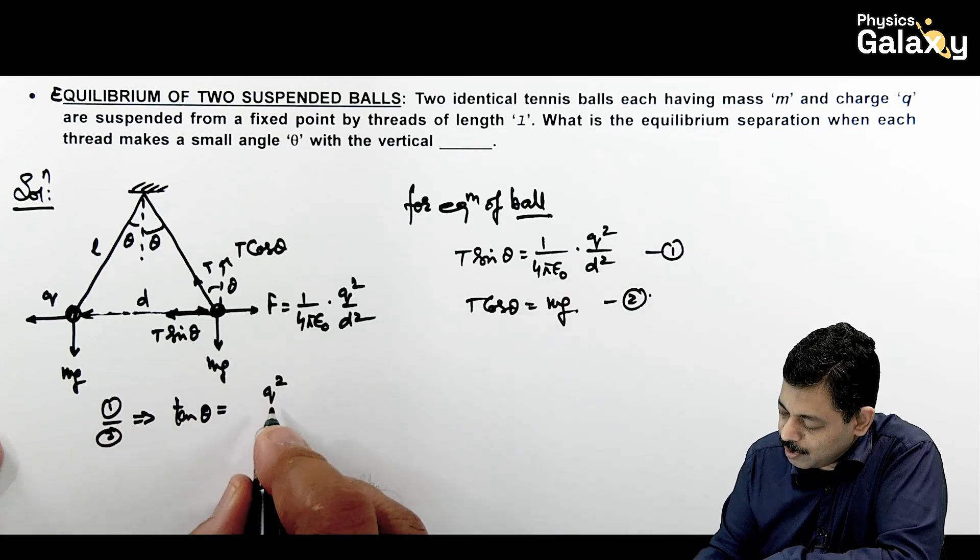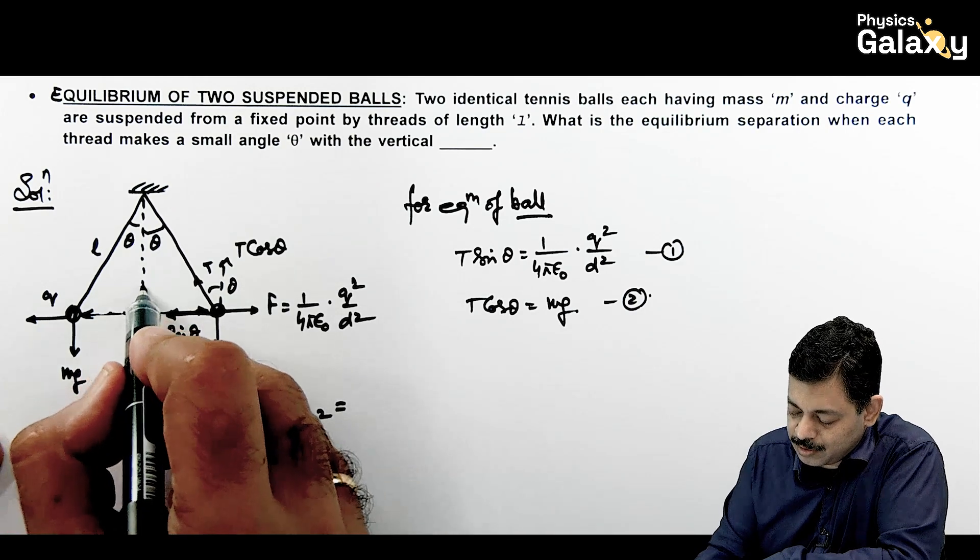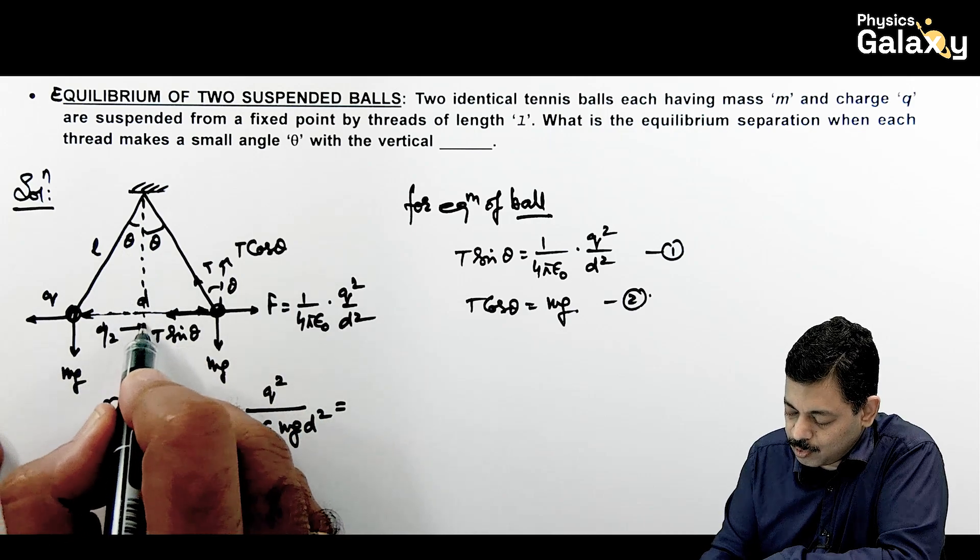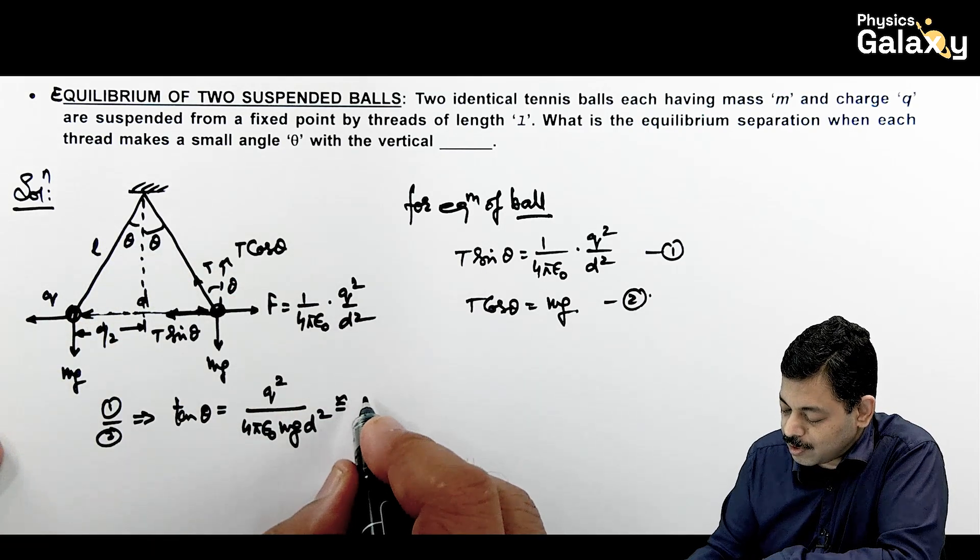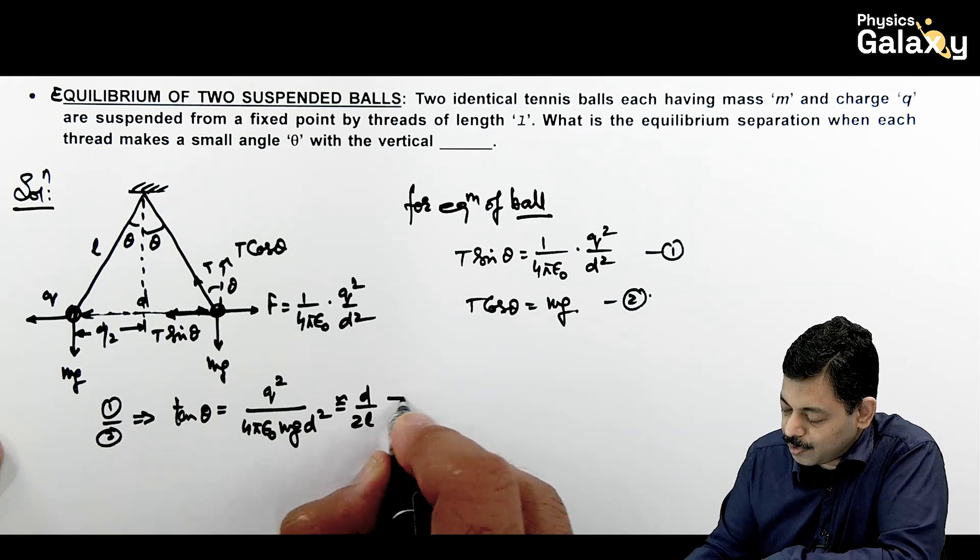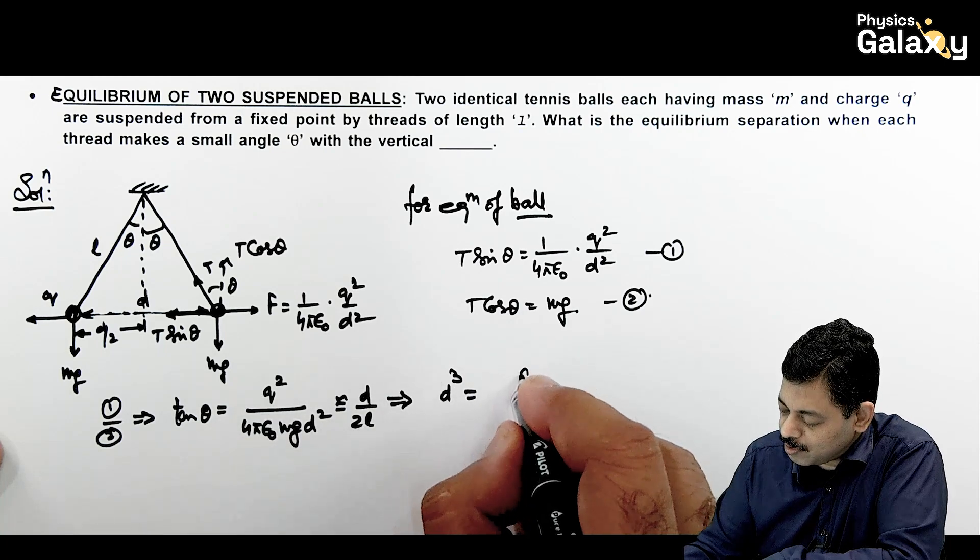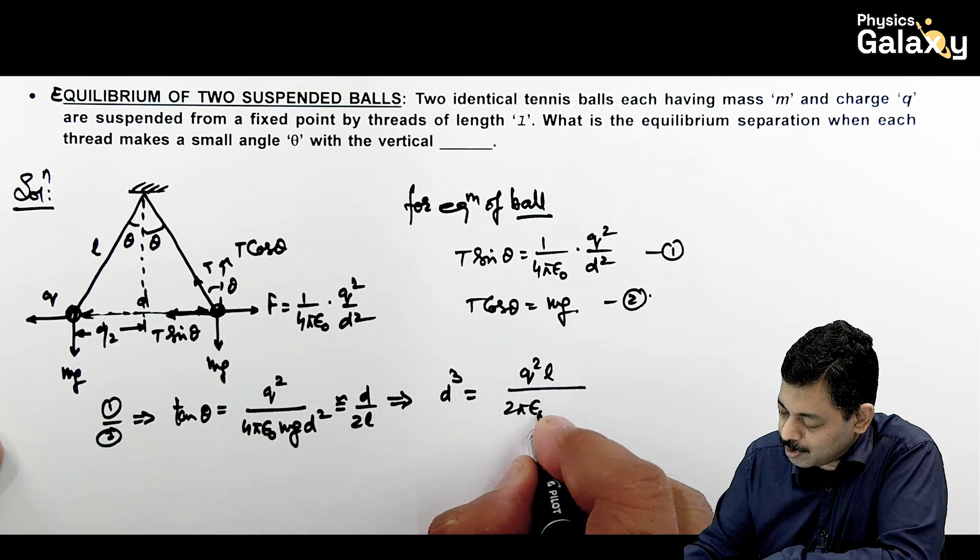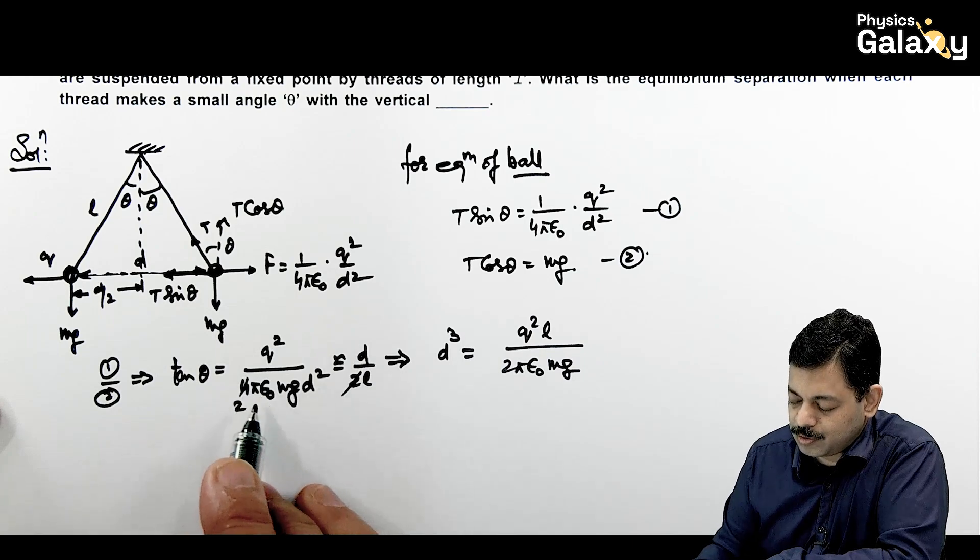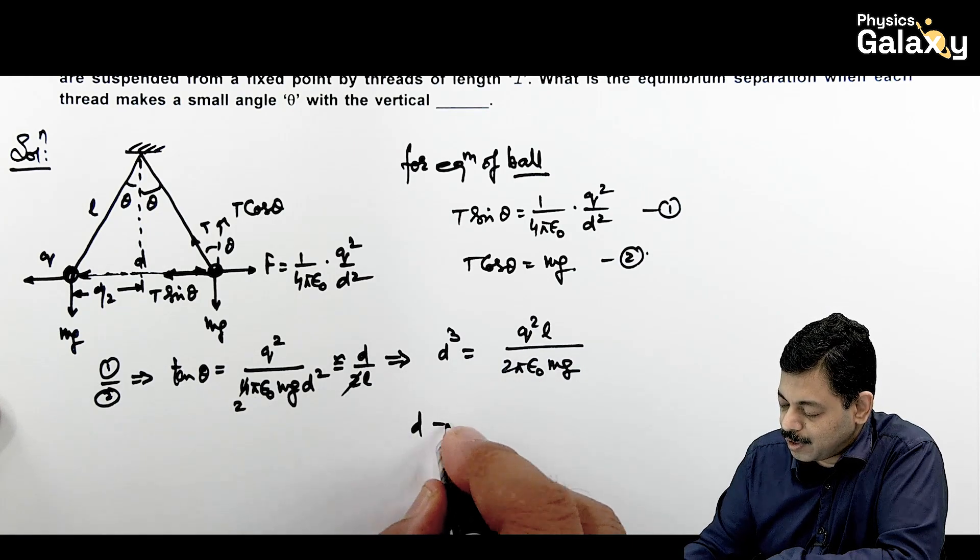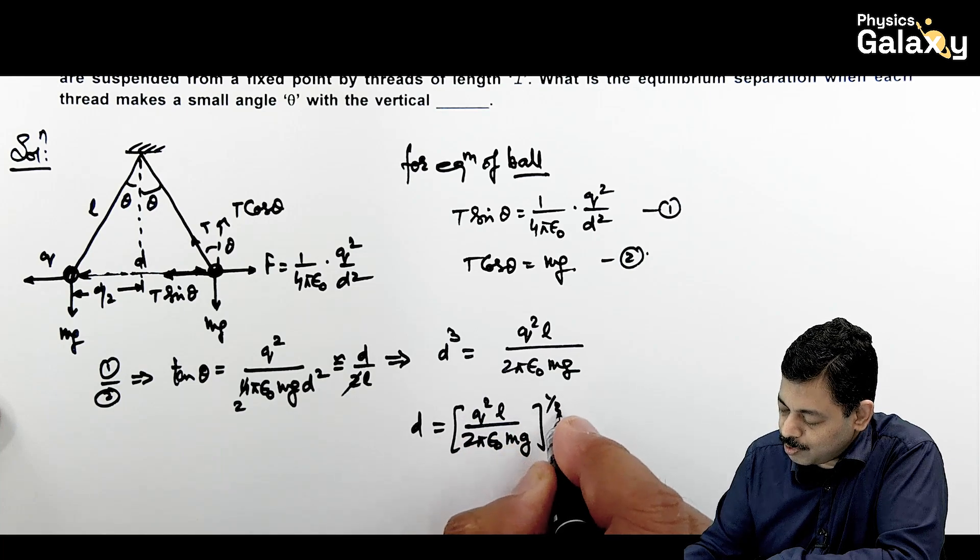So in this situation, if we divide the two equations, this gives us tan theta is giving us Q square divided by 4 pi epsilon naught Mg D square. The value of tan theta in this triangle, we can write this as D by 2 and this can be written approximately L, because theta is small so cos theta can be taken as 1. So this can be written as tan theta equals D by 2L. So simplifying this gives us D cube equals 2L can be taken over here, so this is Q square L divided by 2 pi epsilon naught Mg. Now if we take L here, then this 2 gets cancelled out. So this is 2 pi epsilon naught Mg, and the value of D, equilibrium separation we are getting is Q square L by 2 pi epsilon naught Mg cube root. That's the answer for this problem.